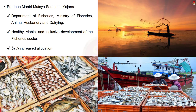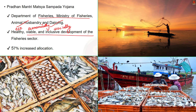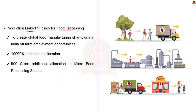The next scheme is Pradhan Mantri Matsya Sampada Yojana. The Department of Fisheries under the Ministry of Fisheries, Animal Husbandry and Dairy is the implementing agency. This scheme aims to bring about ecologically healthy, economically viable, and socially inclusive development of the fisheries sector in India. It received an increased allocation of 679 crore, which is a 57% increase from last year.